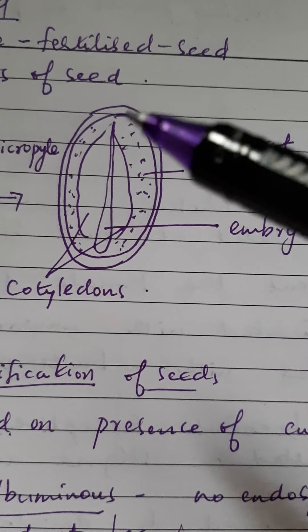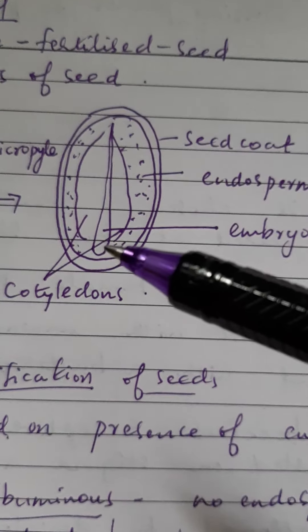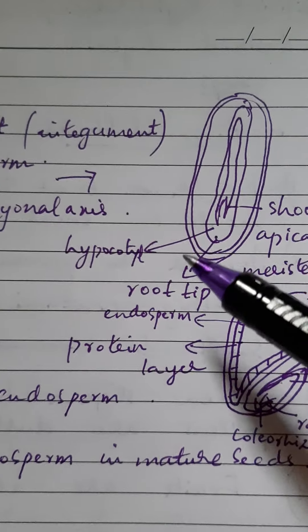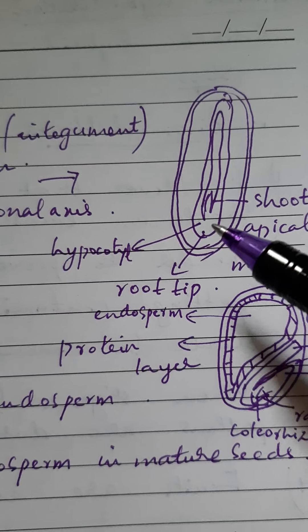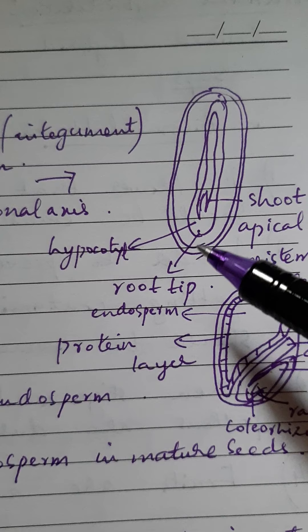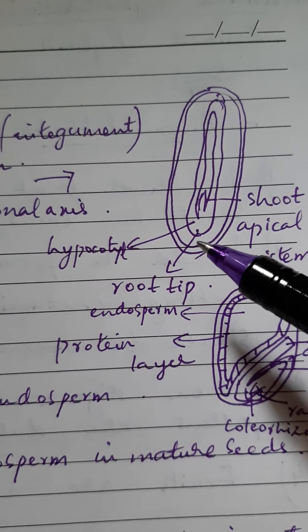Then about the embryonal axis. There is a tissue called hypocotyl. Hypocotyl becomes a stem. Hypocotyl terminates in root tip or radicle.